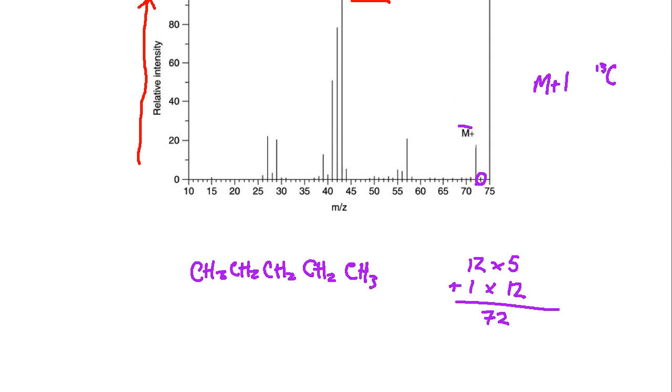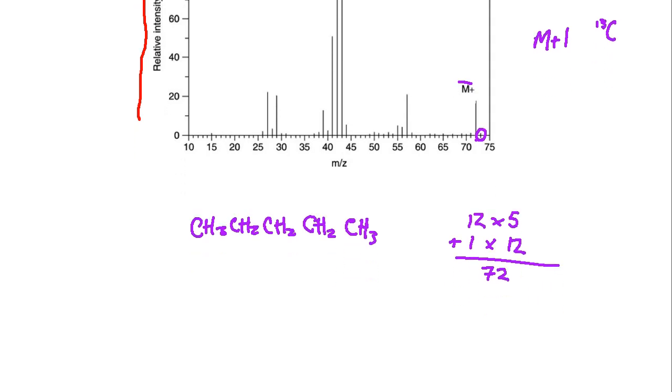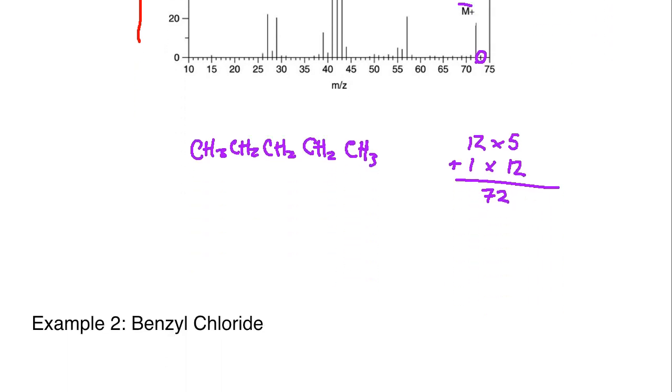What's going to happen is you will get all sorts of different fragments, and that's what all of these different peaks represent. We're just going to look at some of the most common ones that might happen.